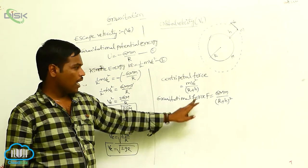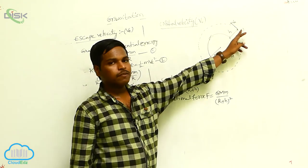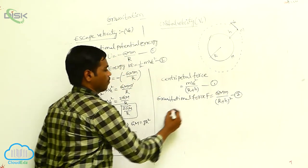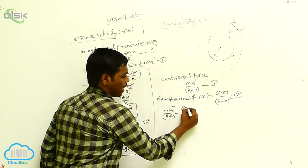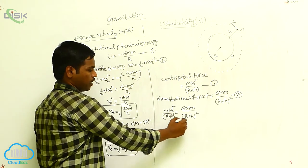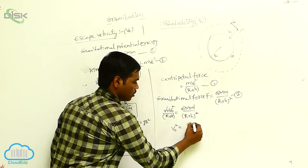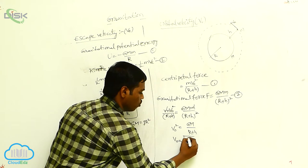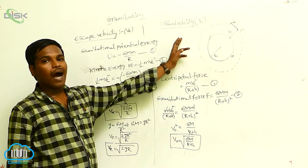The centripetal force and the gravitational force are equal and acting in opposite directions — only then can the object revolve around the planet. Setting them equal: m·V₀² by (R+h) equals GMm by (R+h)². Cancelling one (R+h) and m from both sides gives V₀² = GM by (R+h), so V₀ equals the square root of GM by (R+h). This is the equation for orbital velocity.